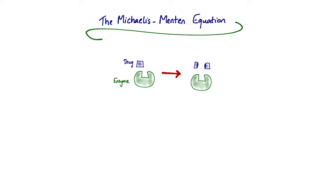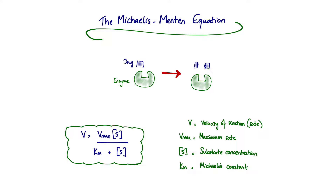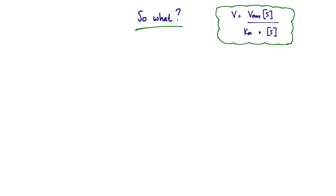The Michaelis-Menten equation models the rate kinetics of a biological reaction, usually quoted in terms of an enzyme-substrate reaction — for example, a drug molecule being metabolized by an enzyme. The equation is: V is the velocity or rate of the overall reaction, which equals Vmax (the maximum rate of that reaction) multiplied by substrate concentration S, divided by the Michaelis constant Km plus substrate concentration S. The Michaelis constant can be thought of as an indicator of the efficiency of the system.